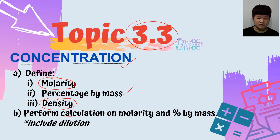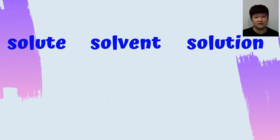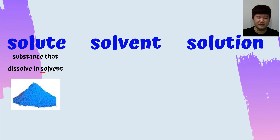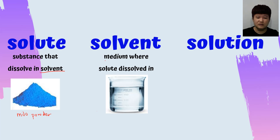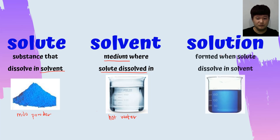We are going to do some calculations on molarity, percentage by mass and density. Before we go into concentration, it's very important for you to know what is solute, solvent and solution. Solute is a substance that dissolves in solvent. A simple example is Milo powder — your Milo powder is the solute, and you put your Milo powder into a solvent, which is the medium where the solute dissolves. So your solvent for the Milo powder will be hot water, and then you produce your solution — your Milo drink.